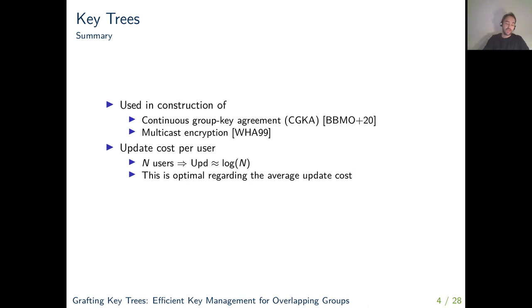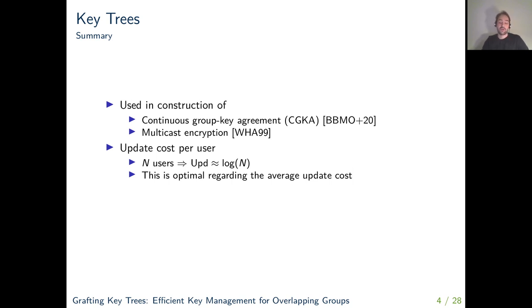Key trees are used, for example, in the construction of CGKA, specifically in the current standardization effort for message layer security. They are also used to construct multicast encryption schemes. In that setting, a central authority knows all of the secret keys and performs the updates. Here it is sufficient to rely on symmetric encryption instead of asymmetric encryption, and updates are more about adding or removing users from the group rather than recovering from corruption.